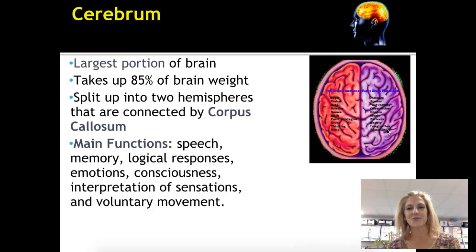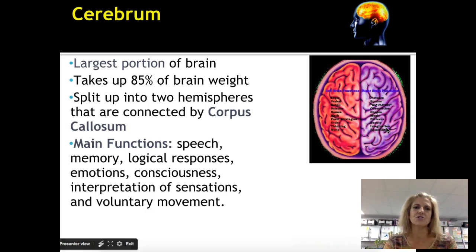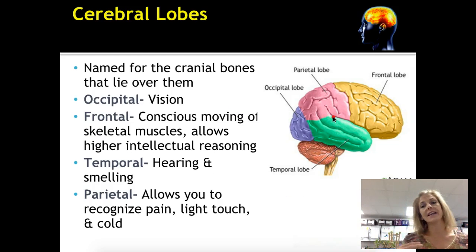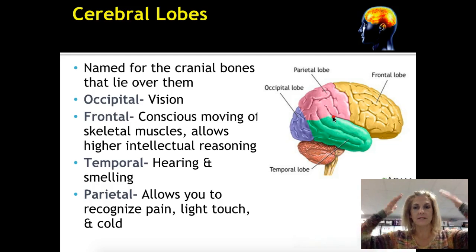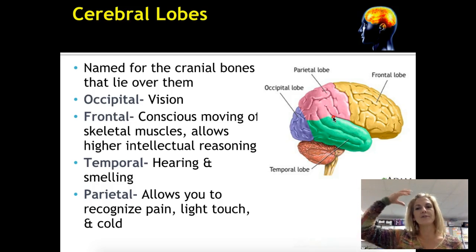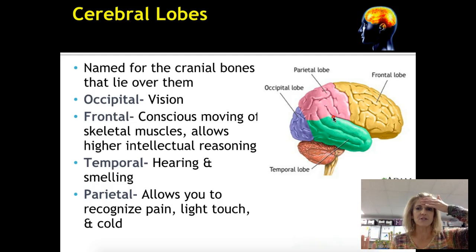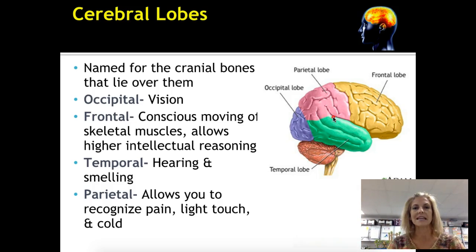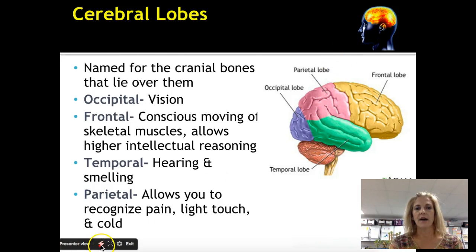When you're taking a test, you're using your frontal lobe of the cerebrum. Our emotions, consciousness, interpretation of sensation — whether something was hot, cold, light, or ticklish — all come from the cerebrum. Voluntary movement, like clapping my hands, is the result of cerebral thought. The cerebrum is divided into lobes, and the skull bones overlying each lobe give the lobe its name: frontal, temporal, parietal, and occipital.